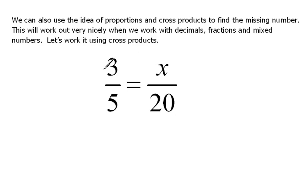While with something like this, we can figure out what to multiply by 5 to get 20, and then do the same thing at the top. That's not too bad. That's pretty easy.